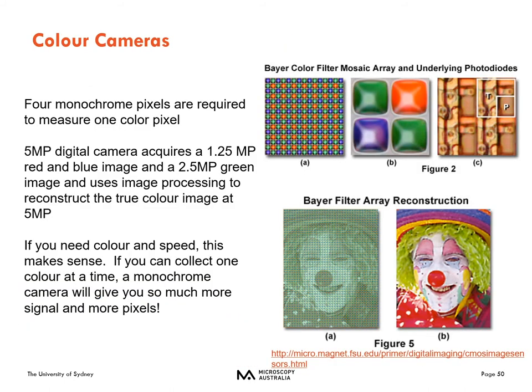In fluorescence microscopy, we typically use a monochrome camera since we know the color from our filter cube and can false-color images later in software. For brightfield imaging such as H&E or DAB, you may want a color camera. Color cameras use a Bayer filter in front of four monochrome pixels — two green, one red, one blue — to determine the color value in the image.